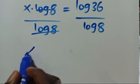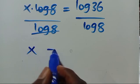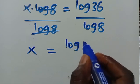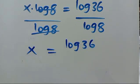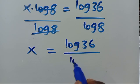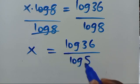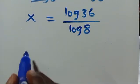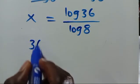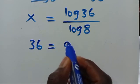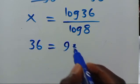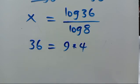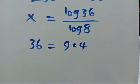We get X equals log 36 over log 8. Now let us recall that 36 equals 9 times 4, so substituting that in we have X equals log(9 × 4) over log 8.